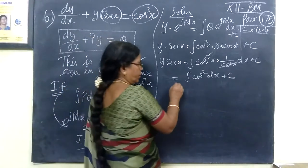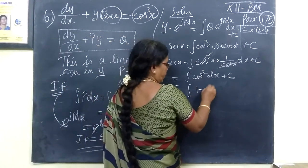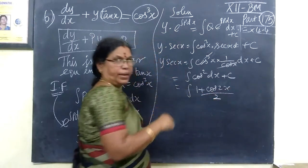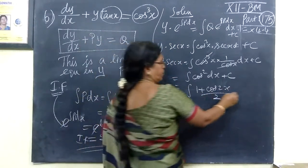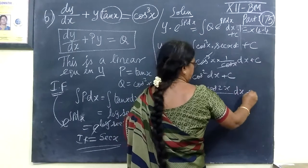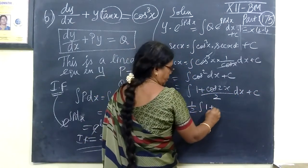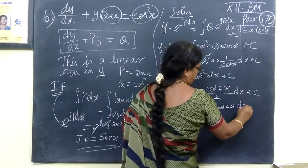Secant x dx. This is also very relevant. So integral 1 plus cos 2x dx.